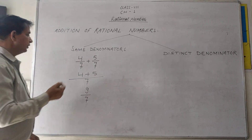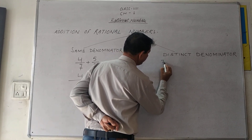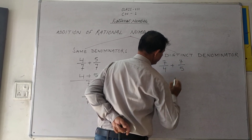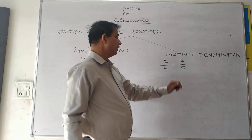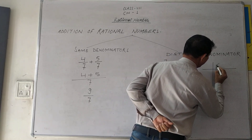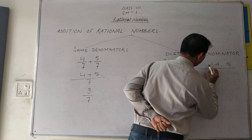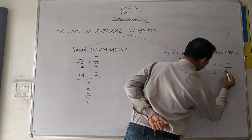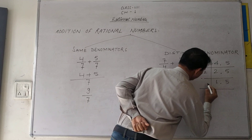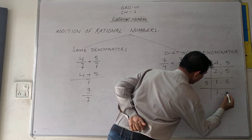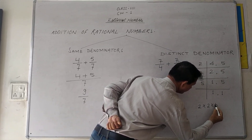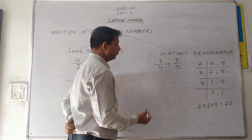For different denominators, suppose 7 upon 4 and 7 upon 5. The denominators are different, so first take the LCM of 4 and 5. Divide by 2: gives 2 and 5. Divide by 2 again: 1 and 5. Divide by 5: 1 and 1. So 2 multiplied by 2 multiplied by 5 equals 20. The LCM is 20.